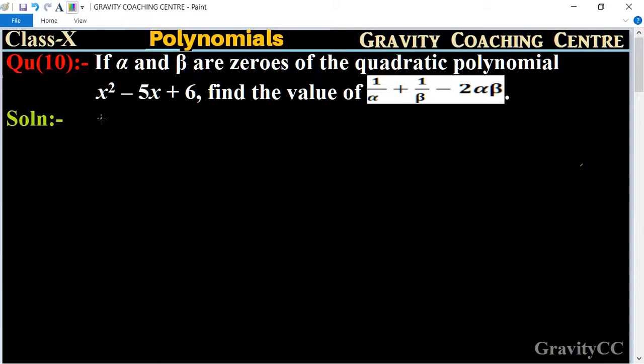Class 10, Chapter Polynomials, Question Number 10: If α and β are zeros of the quadratic polynomial x² - 5x + 6, find the value of 1/α + 1/β - 2αβ.